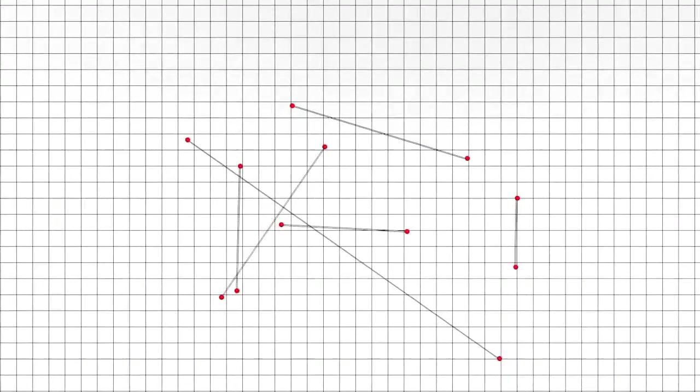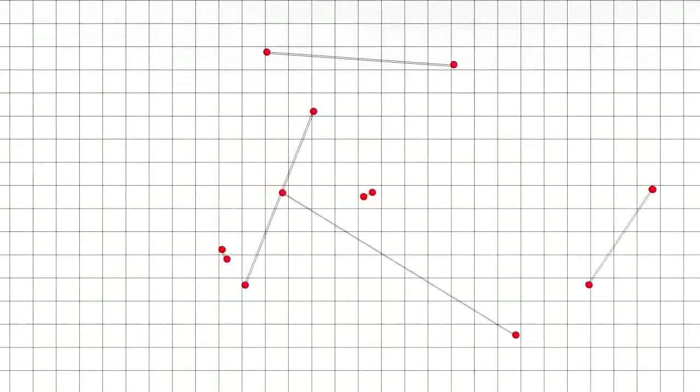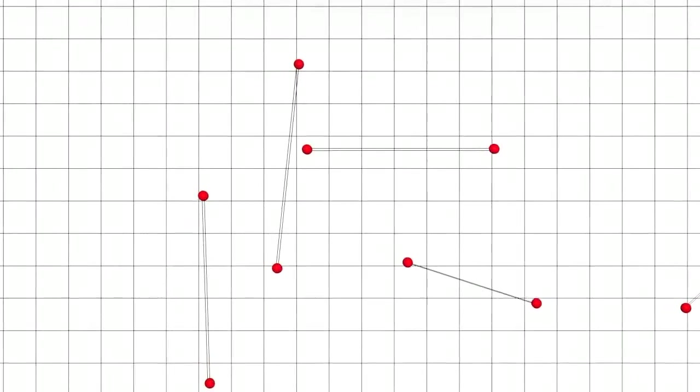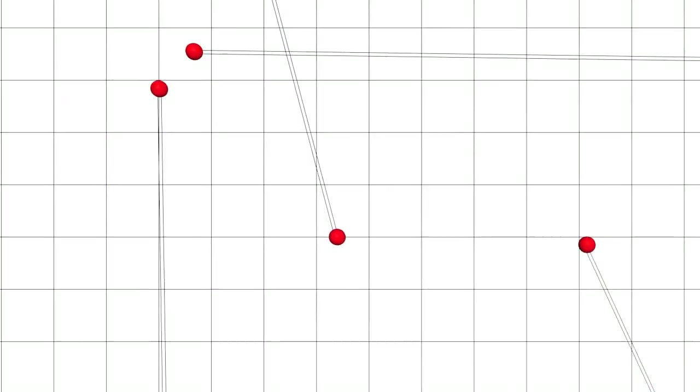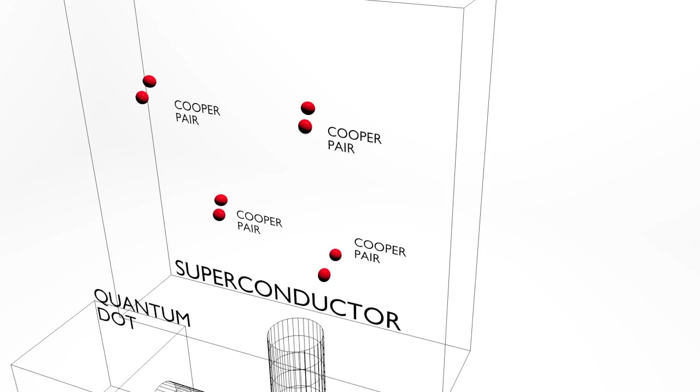When this happens collectively, a phase transition occurs from a normal metal phase to the superconducting phase, characterized by a condensate of these Cooper pairs. Cooper pairs move unimpeded through the material because the interactions that lead to resistance become forbidden for a range of energy called superconducting gap.